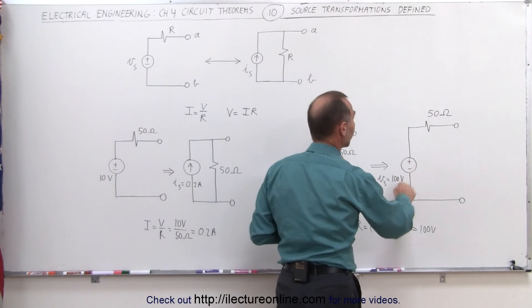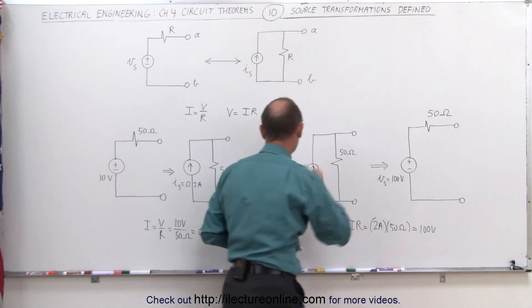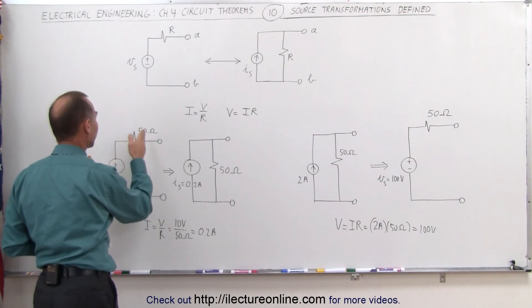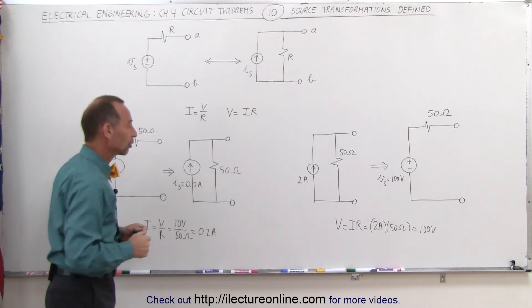Divide 100 volts by 50 ohms. You get 2 amps, which is the current source. Here, when you divide 10 volts by 50 ohms, you get 0.2 amps to the current source.